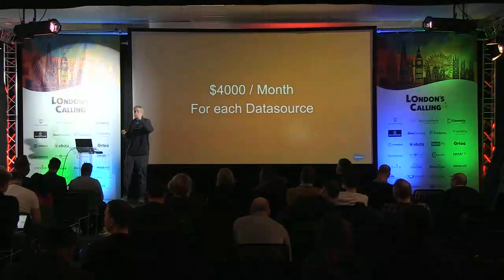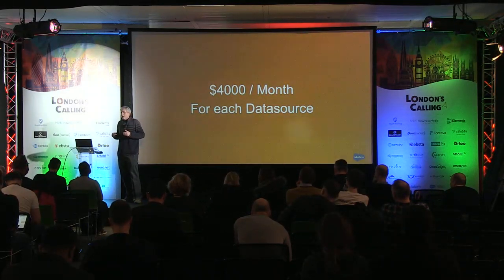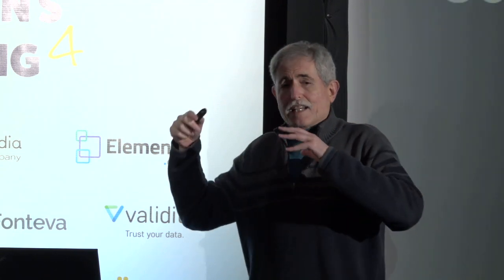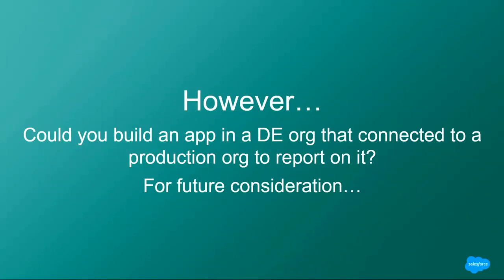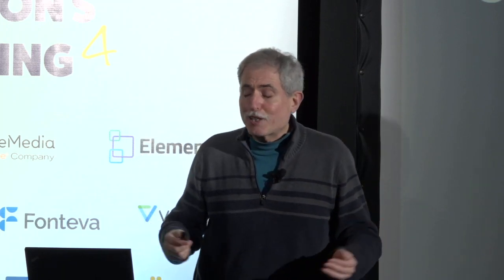So that's why I sort of said at the beginning this might be the most useless session at London's Calling. However, I was talking earlier to Don, who is devious, and he came up with a very interesting idea: could we not build the connector on a DE org and instead of doing a SOQL call on the local system, do a REST call onto a production system? Then you have your DE org, which can create reports on external objects from a production system and do all this stuff. I don't know — maybe you can. It seems like it's bypassing all kinds of license restrictions, maybe. But I think it would work, so it's worth considering.